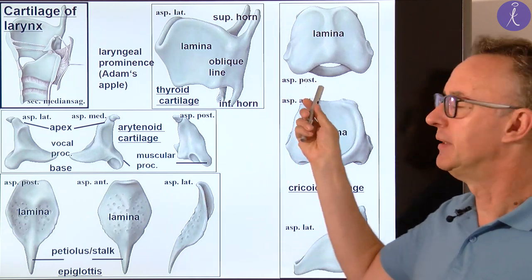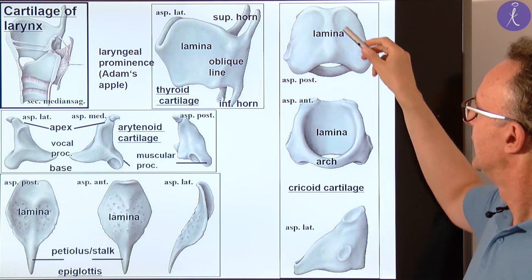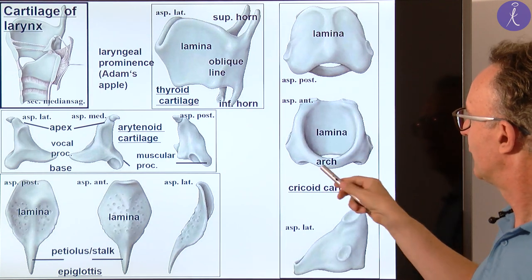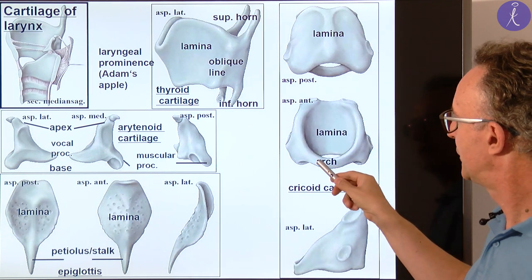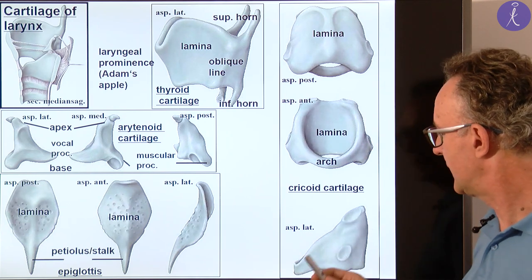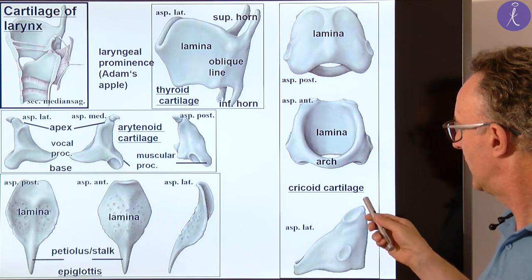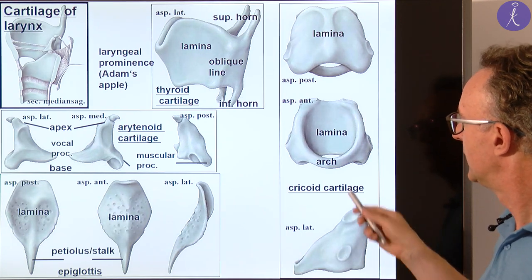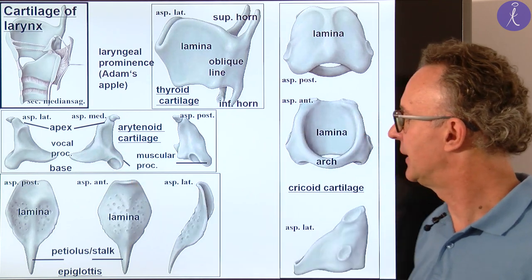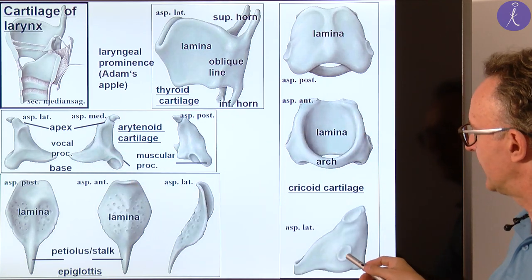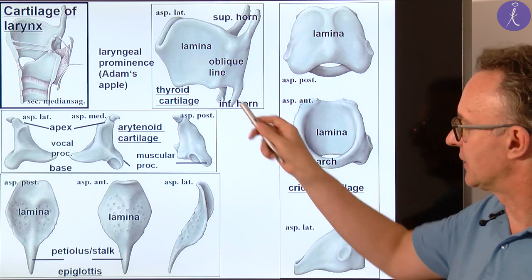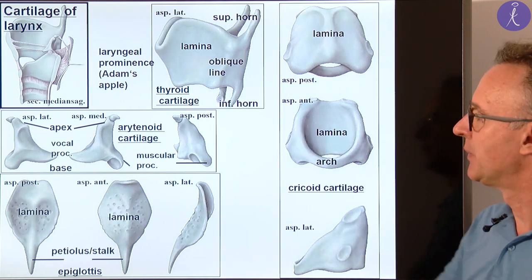The cricoid cartilage is next. It has two articular surfaces for the arytenoid cartilages — here you see them for the arytenoid cartilages — and two on the lateral side for the previously mentioned thyroid cartilages.